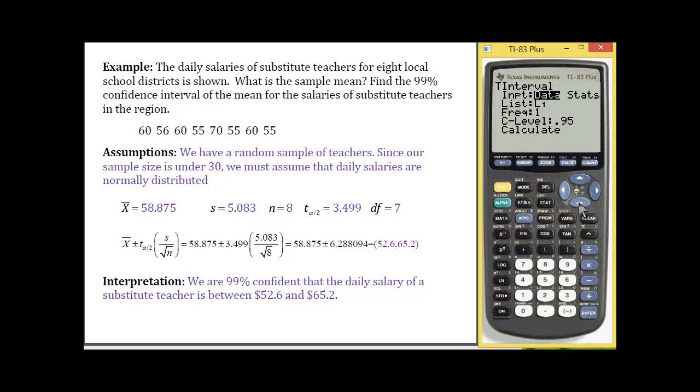Freq, so this is if you happen to have data that occurs in your list and it's represented more than once. So for us, each of those observations are representing just one observation in your sample, so leave frequency to 1.